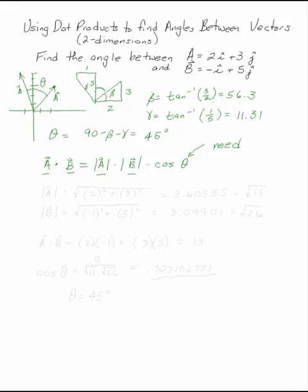Remember, trigonometric inverses didn't always used to be as easy as your calculator. Let's start first by finding the magnitude of A using the Pythagorean theorem. That's 2 squared plus 3 squared under the square root or 3.60555, the square root of 13.